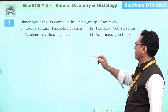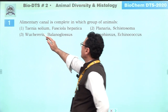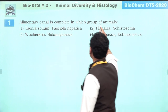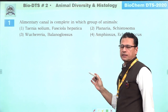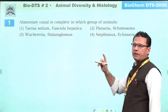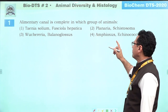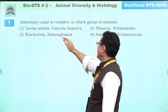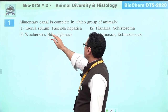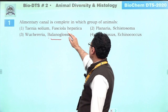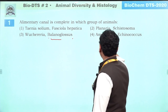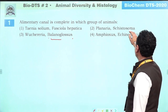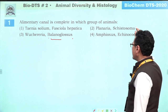Question number one: the alimentary canal is complete in which group of animals? The alimentary canal is complete after Platyhelminthes. After Platyhelminthes, the group is Aschelminthes. Taenia is a Platyhelminthes — it is not there. Planaria is also Platyhelminthes — also with incomplete alimentary canal.